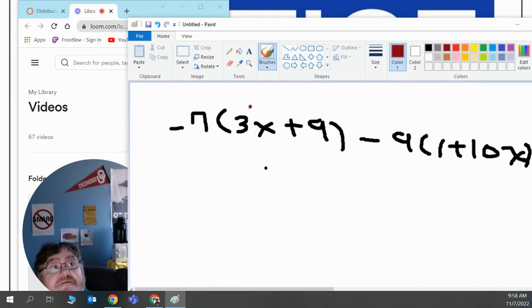So here we have negative 7 times 3x plus 9 minus 9 times 1 plus 10x.